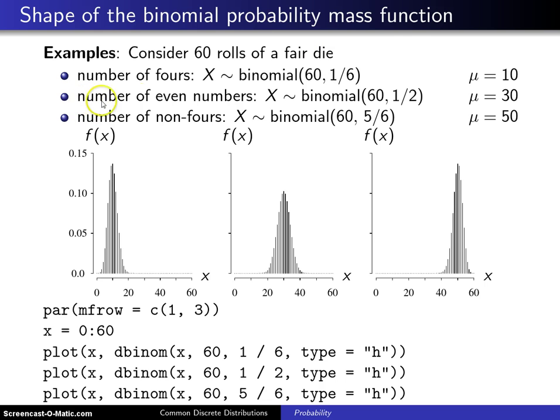The second example is the number of even numbers. In this case, if X is the number of even numbers, you still have 60 trials but the probability of rolling an even number on each trial is 1/2.